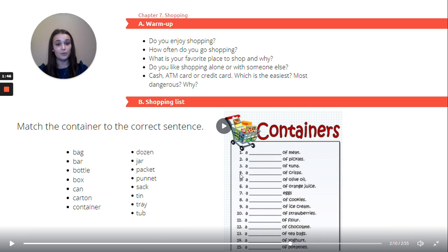Sentence number four. A of crisps. That would be a packet of crisps. Sentence number five. A of olive oil. We're going to have a look. A bottle of olive oil.